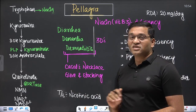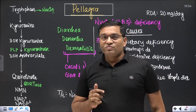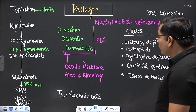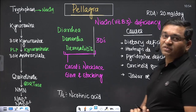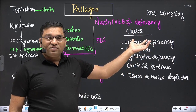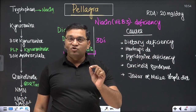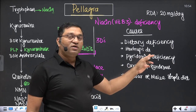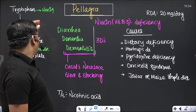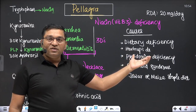In niacin deficiency, the dermatitis is Casal's necklace dermatitis, which also gives a glove-and-stocking appearance due to peeling of the skin on the hands and feet. Regarding causes of niacin deficiency: it is mainly dietary deficiency. It can also be due to Hartnup disease, which involves defective absorption of tryptophan from the intestine, thus reducing the tryptophan contribution to niacin.